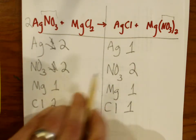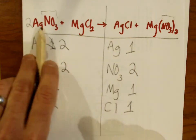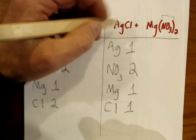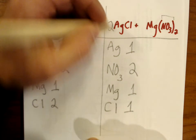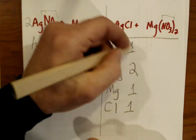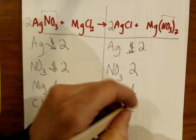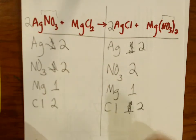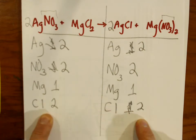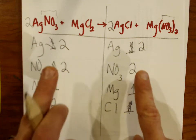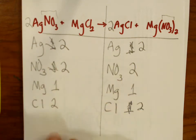Let's fix silver. If we've got two silvers on the reactant side, we're going to need two silvers on the product side. So let me put a coefficient of two in front of silver's compound — silver becomes two, and so does chlorine. Let's update chlorine to two. That actually balanced chlorine for us. And magnesium is balanced, nitrate is balanced, silver is balanced. We did it — balanced.